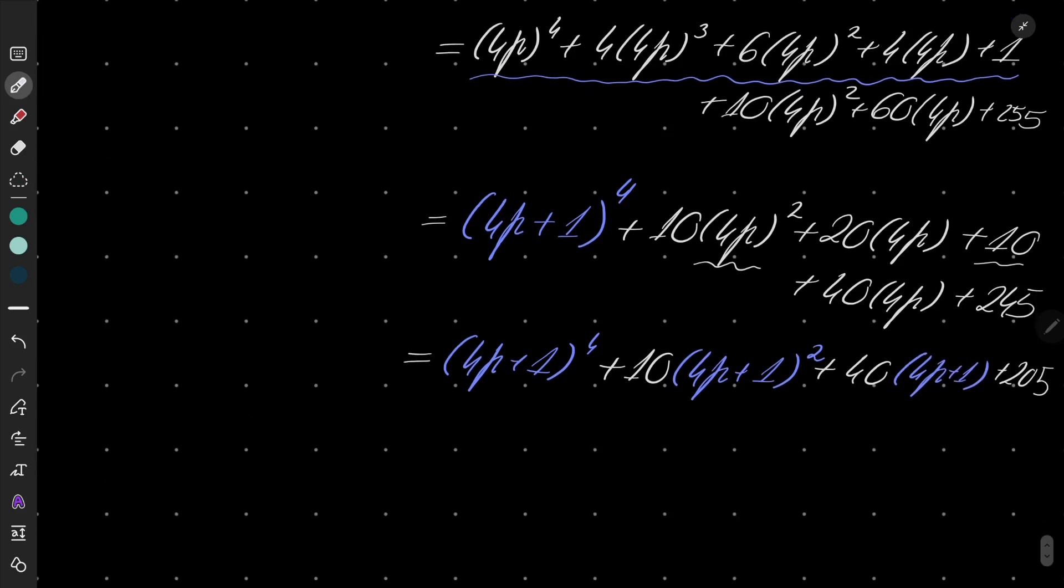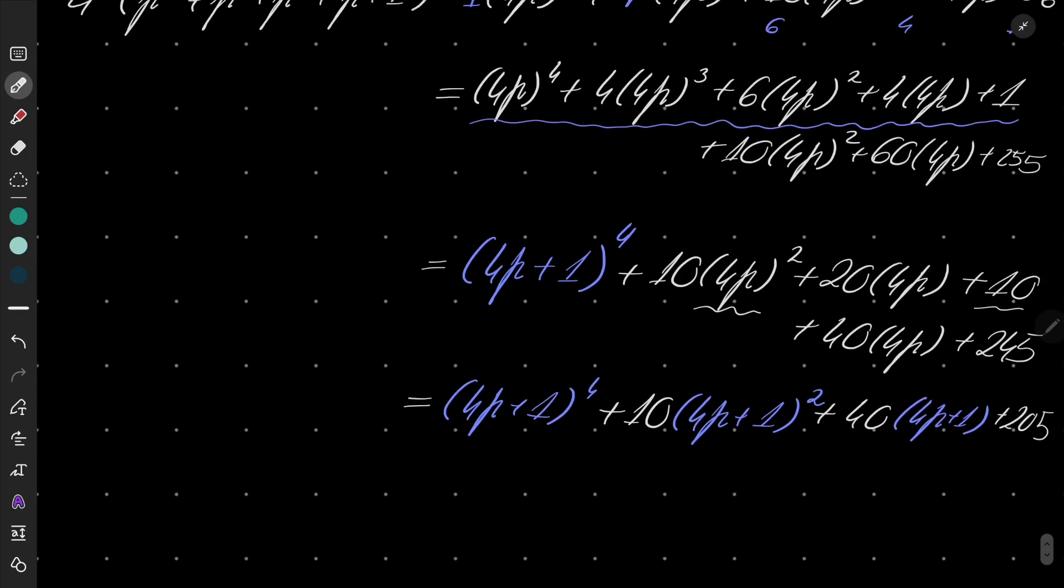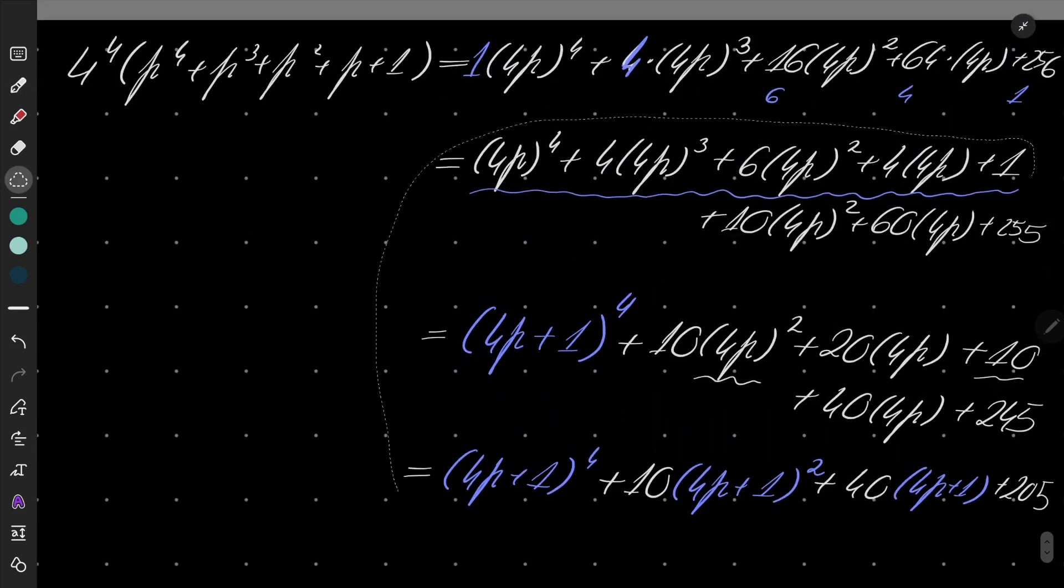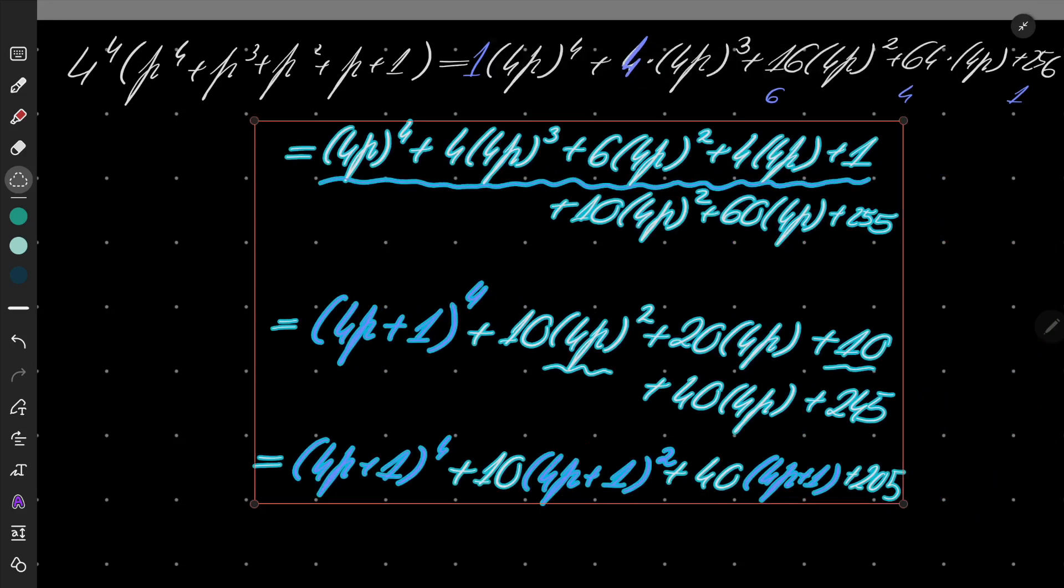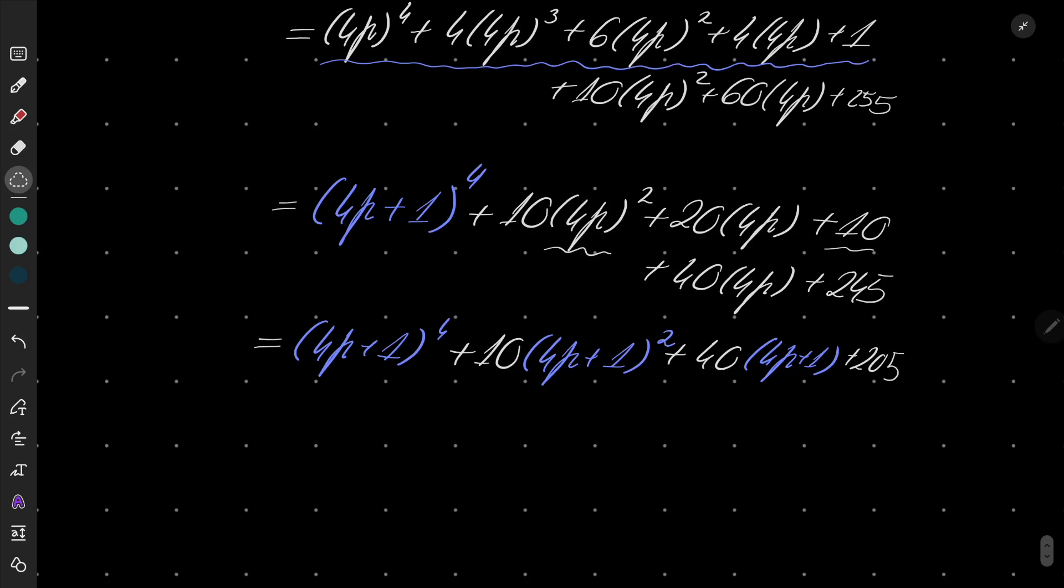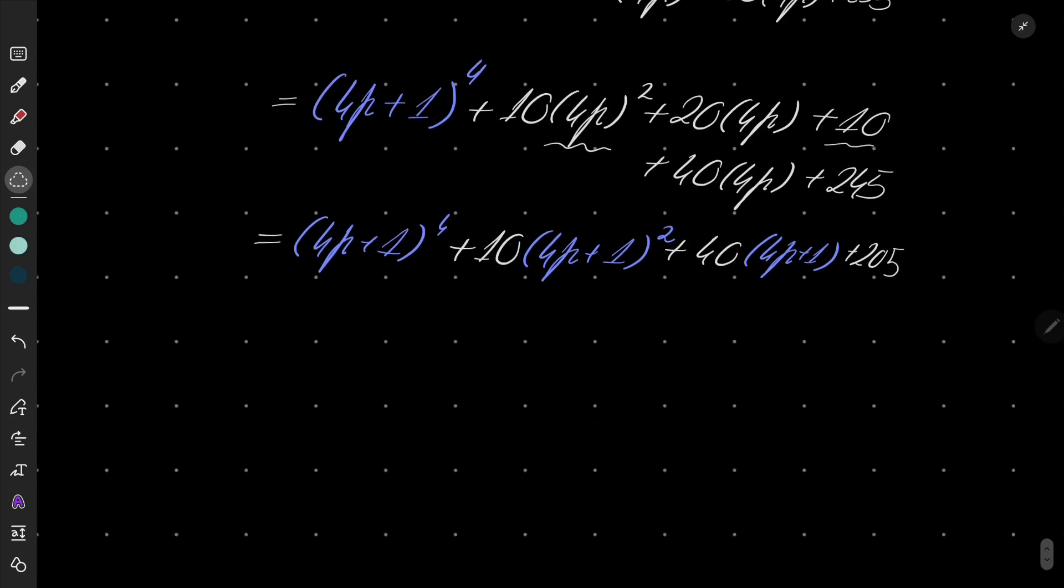And look, I now have my depressed quartic. Now I have my depressed quartic because I have no third power in my expression. I have just fourth power, second power and first power and zeroth power.